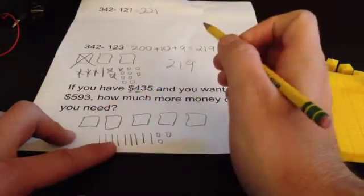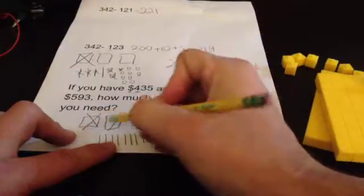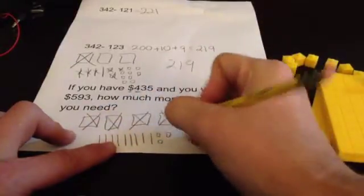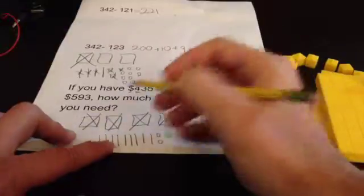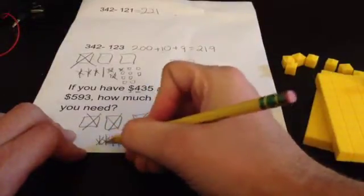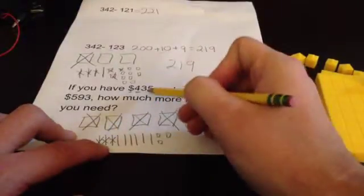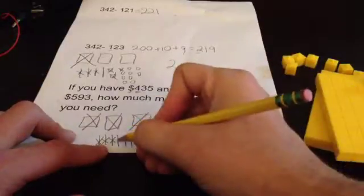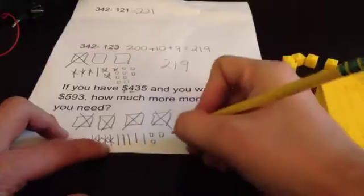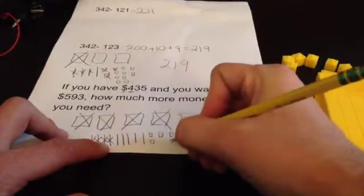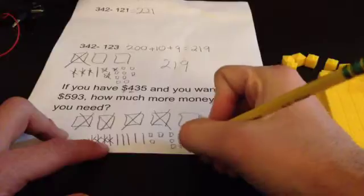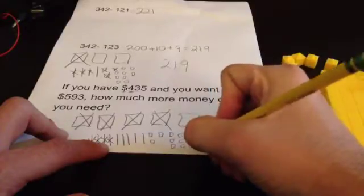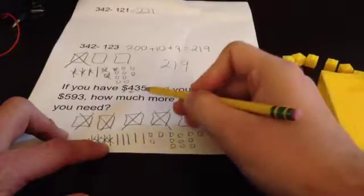So let's take away 435. I'm going to take away 4 hundreds. 1, 2, 3, 4. I'm going to take away 3 tens. 1, 2, 3. I'm going to take away 5 ones. Oh no. I only have 3 ones. I've got to swap one of these tens out for 10 ones. 1, 2, 3, 4, 5, 6, 7, 8, 9, 10.